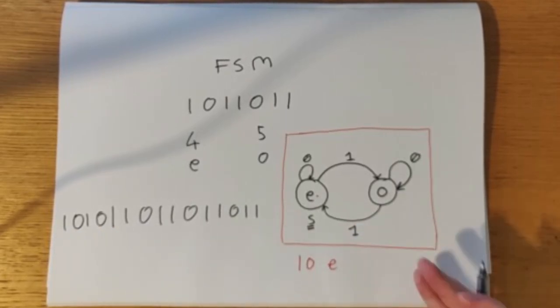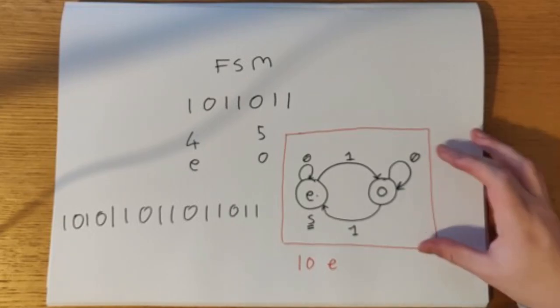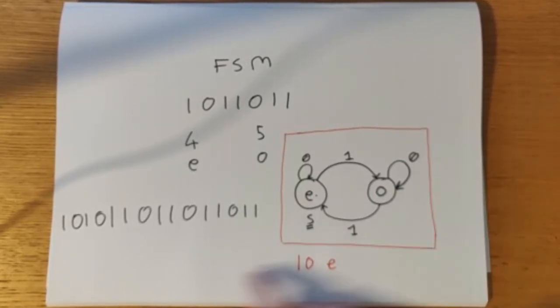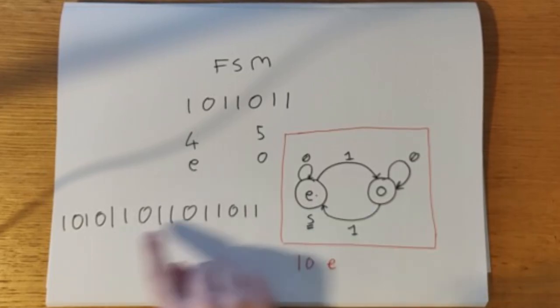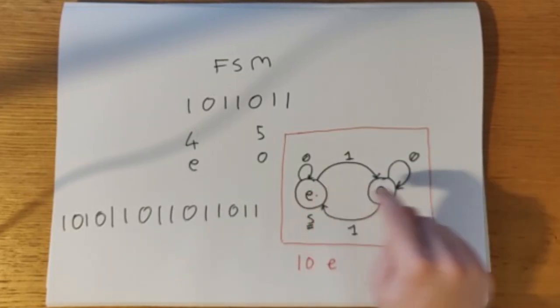10 is an even number and the machine has worked. Now one thing that's really unique about finite state machines you can't really do a lot with other machines is that you can mathematically prove that this is always true given a finite string here.